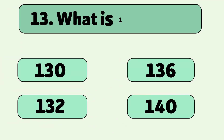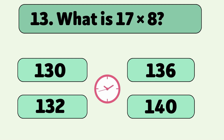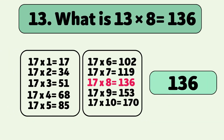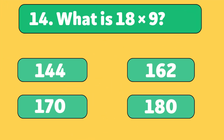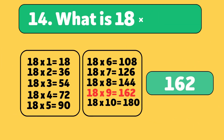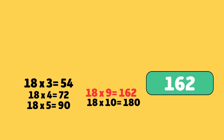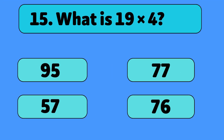17 times 8 is equal to 136. 17 times 8 is equal to 136. 18 times 9 is equal to 162. 18 times 9 is equal to 162. 19 times 4 is equal to...